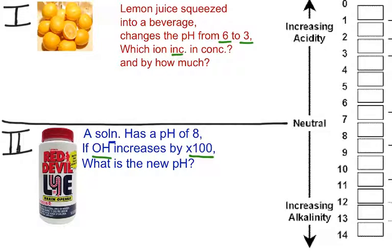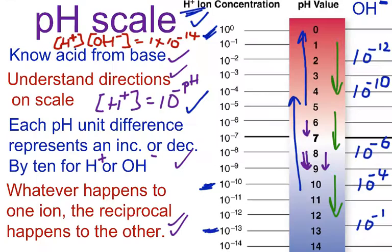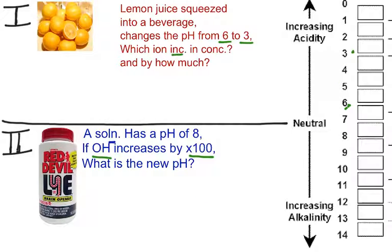We're squeezing lemon juice, which is famous for citric acid, into a solution and it's going from pH 6 to pH of 3. Now, I said before, once again, each unit jump represents times 10. So, first of all, we're going to analyze it. We know that the pH value is going from 6 to 3.